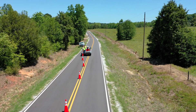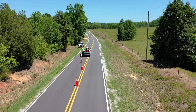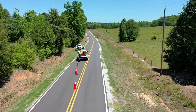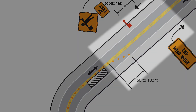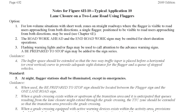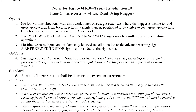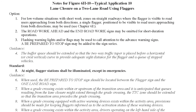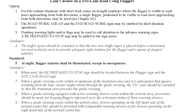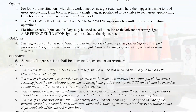The termination area is used to return road users to their normal path. It extends from the downstream end of the activity area to the last TTC device, such as end-of-road-work signs. Notes for Typical Application 10 — lane closure on a two-lane road using flaggers — provide specific guidance for the layout.